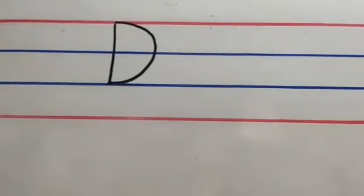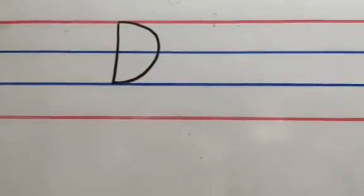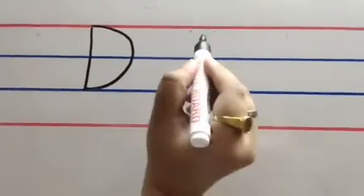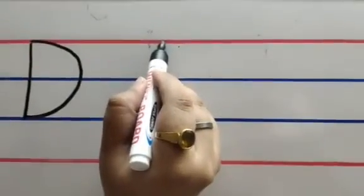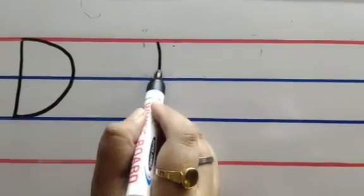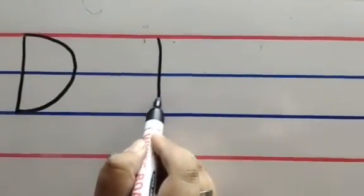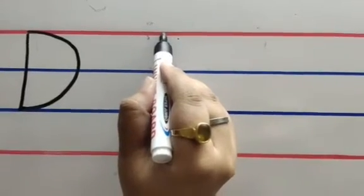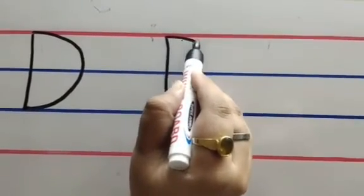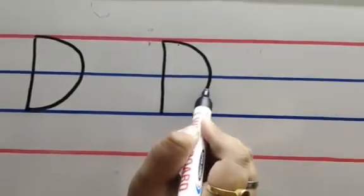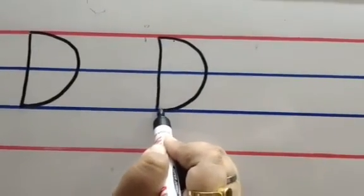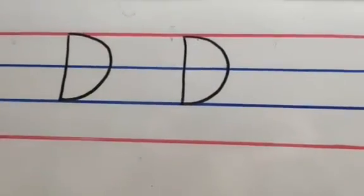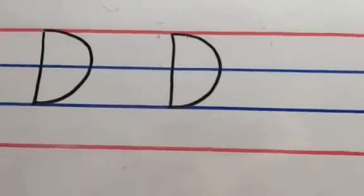This is the capital letter D. Let's have a look at it once more — a standing line from the red line to the second blue line, and a curved right hand side curve from the red line to the second blue line. This is how we write the capital letter D.